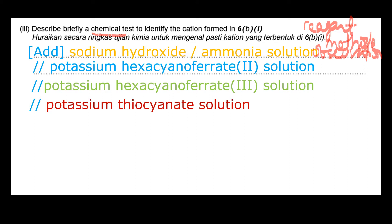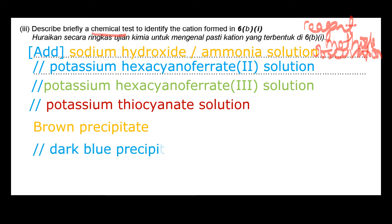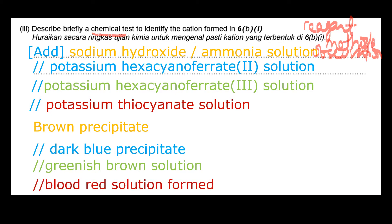If you use sodium hydroxide or ammonia solution, you will get a brown precipitate. If you use potassium hexacyanoferrate(II) solution, you will get a dark blue precipitate. Potassium hexacyanoferrate(III) gives a greenish-brown solution, and potassium thiocyanate solution gives a blood-red solution. For example, you add sodium hydroxide solution and a brown precipitate is formed. That is the way to answer a chemical test question.